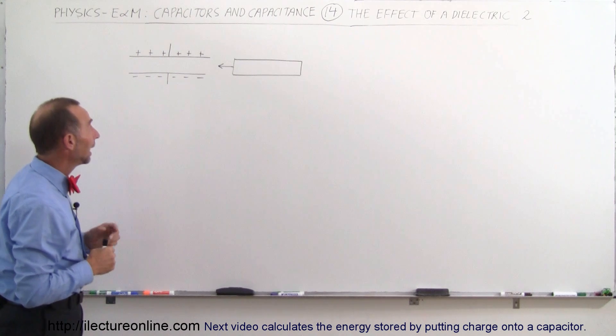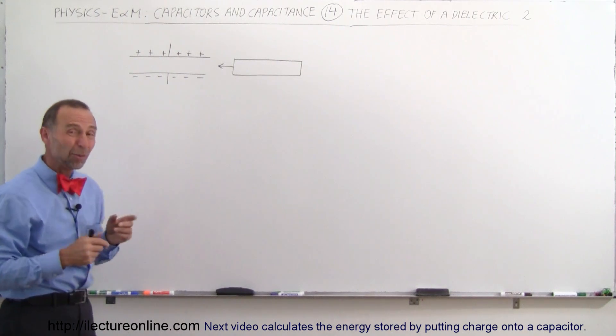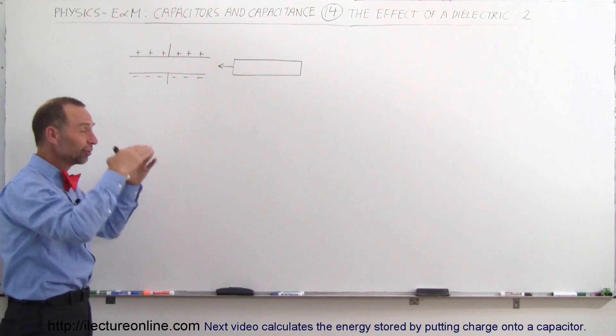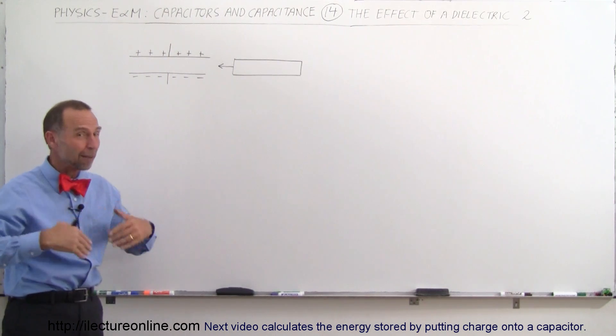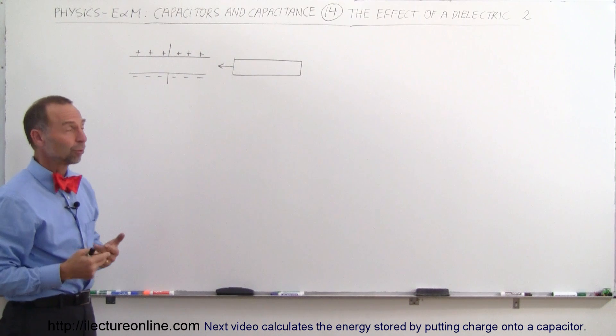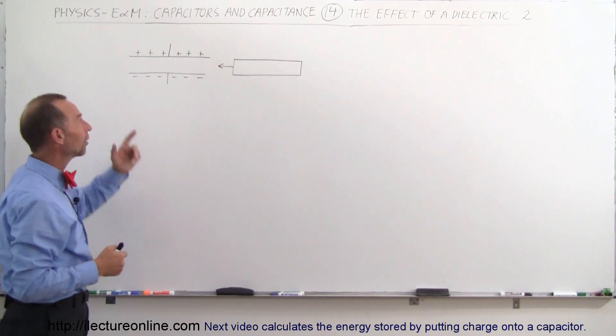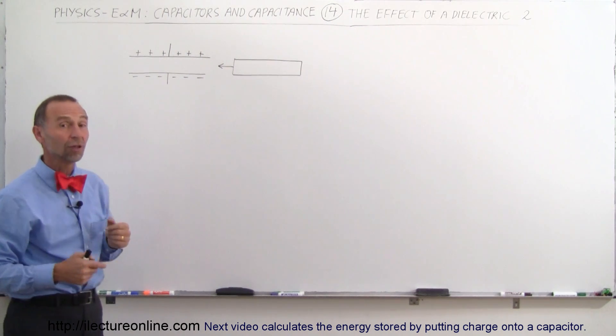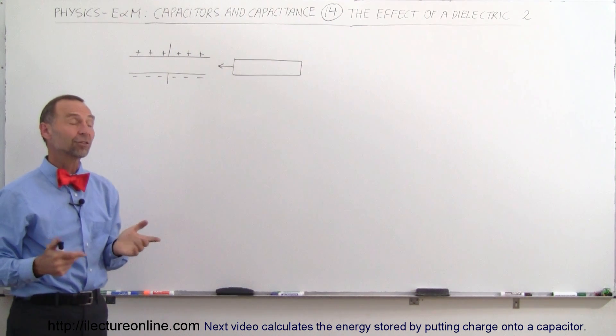There's a relationship between them, and you'll see in just a moment that yes, if you put a dielectric in there, the voltage will drop and the charge will remain the same. So how does that change the capacitance of the capacitor?